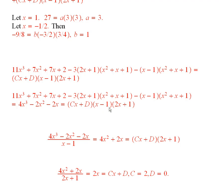Now you notice that x minus 1 divides both sides. So you could use synthetic division or long division, whatever you want, to divide both sides by x minus 1. And then you find that 4x squared plus 2x is equal to this.